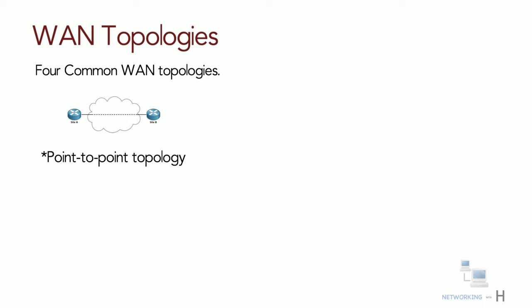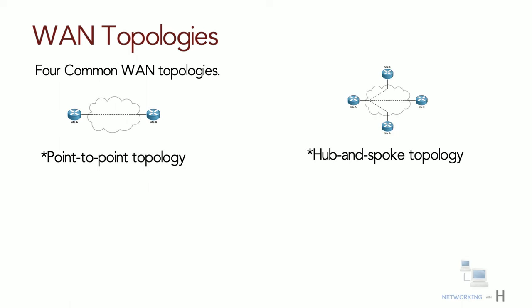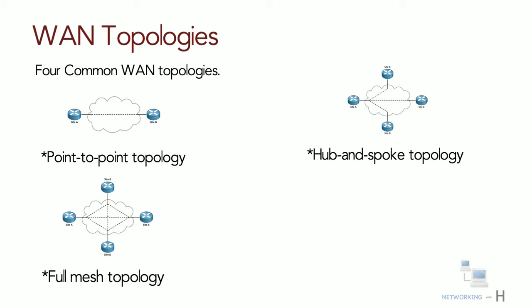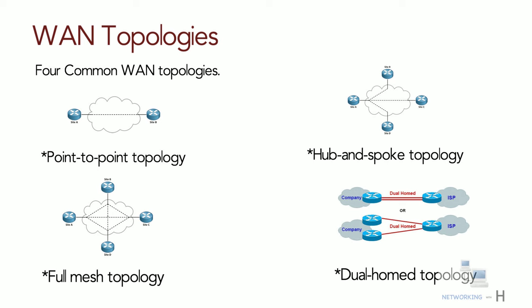Next we have hub-and-spoke topology, which is applicable when a private network connection between multiple sites is required. Then we have full mesh topology, where any site can communicate directly with any other site. Then we have dual home topology, which provides redundancy and load balancing. However, it is more expensive to implement than single home topologies.